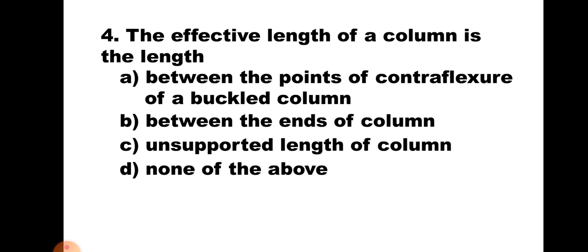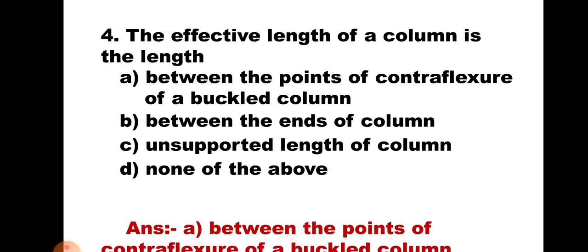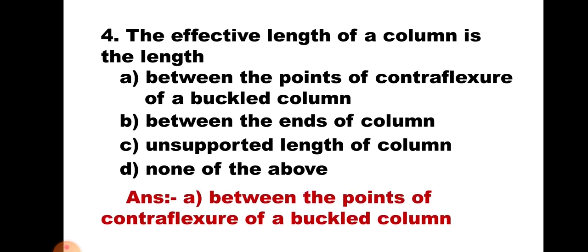Question number 4. The effective length of a column is the length: A) between the points of contraflexure of a buckled column, B) between the ends of the column, C) unsupported length of the column, or D) none of the above. The effective length is the length of the portion of the column which behaves as if it is hinged, and those two hinge points are the points of contraflexure. Hence the correct answer is A, between the points of contraflexure of a buckled column.